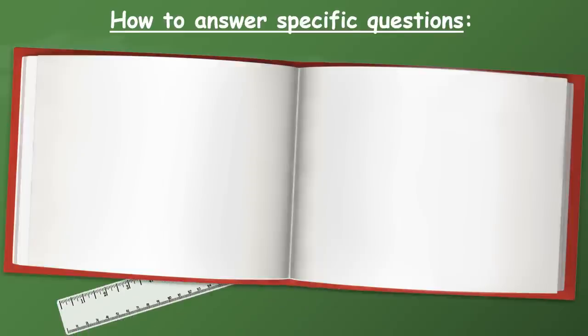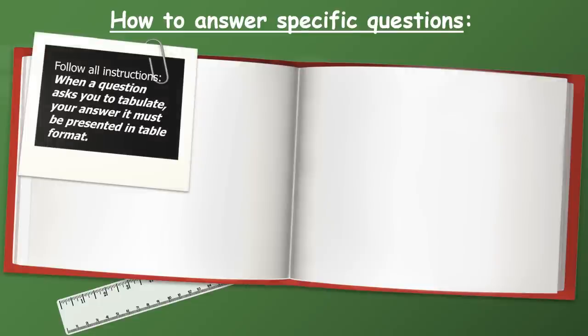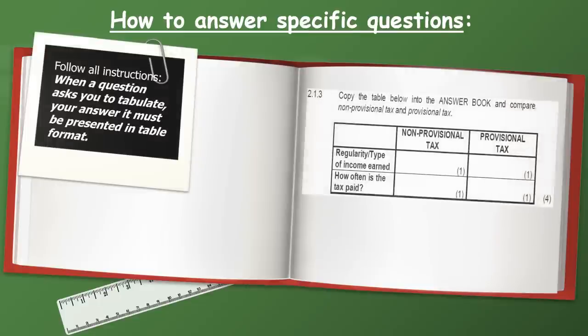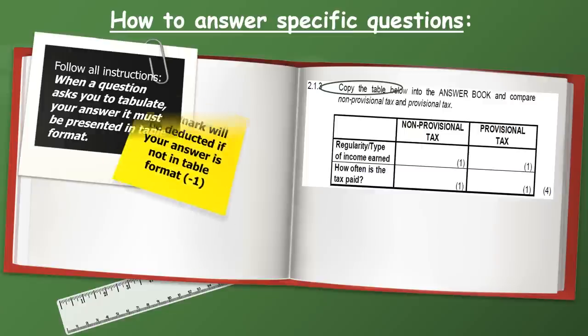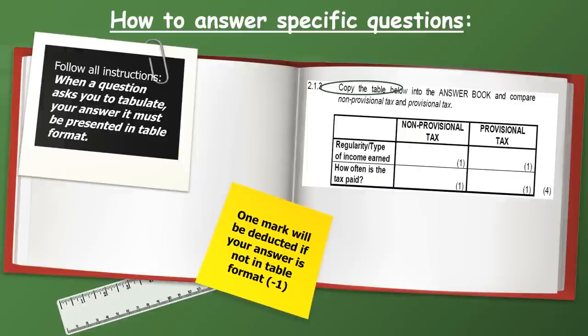Another example: when a question asks you to tabulate your answer, it must be presented in a table format. As shown in this example, it says copy the table below into your answer book and compare non-provincial text and provincial text. Remember to circle the verb — copy the table. One mark will be deducted if your answer is not in table format, and at this stage we do not want to lose any more marks.